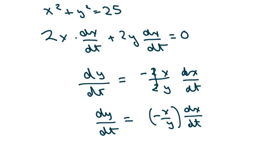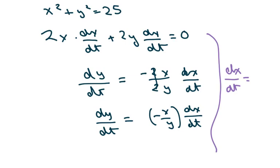Now to do the other one, you're just going to flip it like we've been doing. So derivative of x with respect to t equals negative y over x times derivative of y with respect to t.